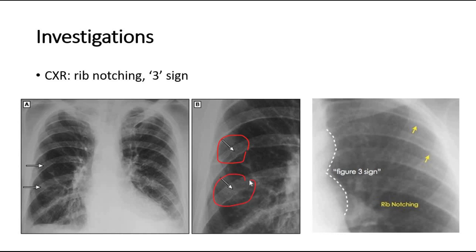The second picture shows the figure 3 sign, which is also seen in coarctation of the aorta. This figure 3 is formed by the pre-stenotic dilatation of the aortic arch and the left subclavian artery, the indentation at the coarctation site — also known as the tuck — and the post-stenotic dilatation of the descending aorta, forming a figure 3 sign.